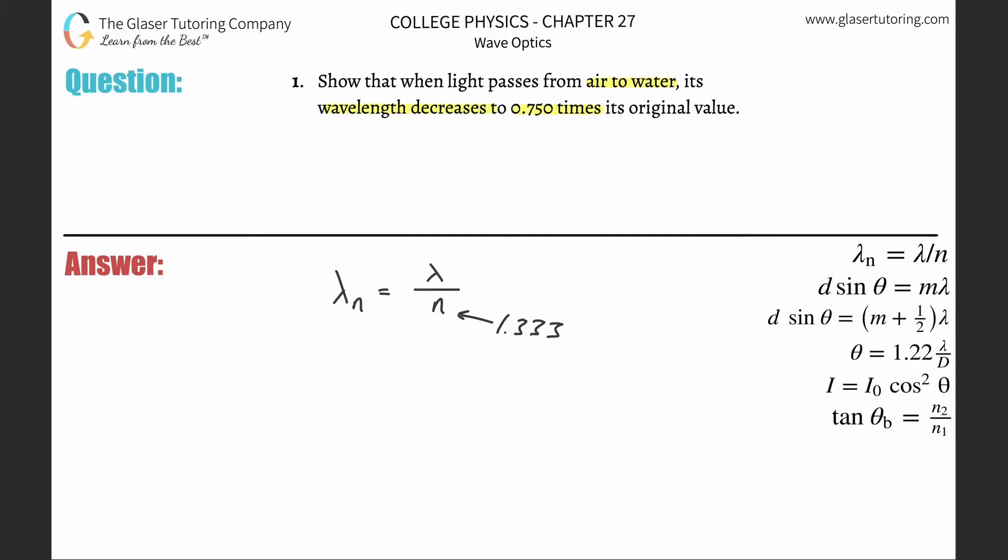So what they want us to show here is that the wavelength decreases to 0.75 times its original value. So in other words, what we need to do is plug in the value of 1.333.